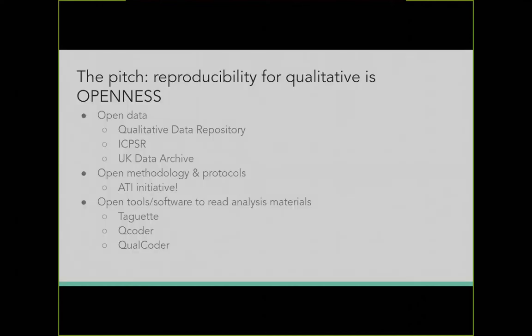This is a very short lightning talk because I'm just giving you my pitch. My pitch is that reproducibility for qualitative work is simply openness. We heard a great talk about how you can share and mitigate risk with sensitive materials, and a lot of those same concerns are echoed in qualitative research — especially because we're interviewing refugees, immigrants, or really at-risk populations. So how can we balance the need for openness as reproducibility with those concerns? That's a really great question.